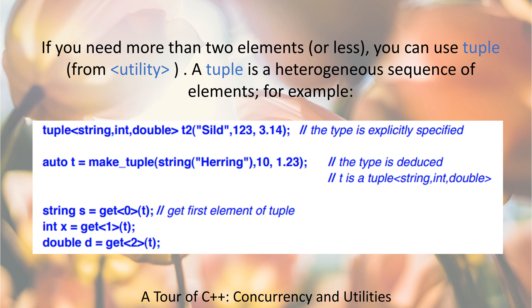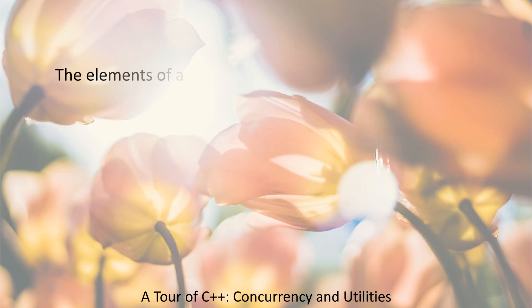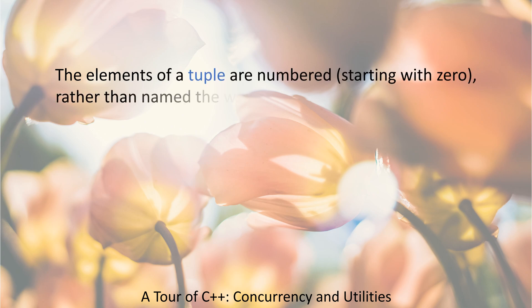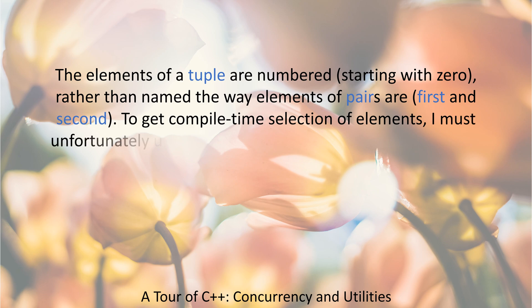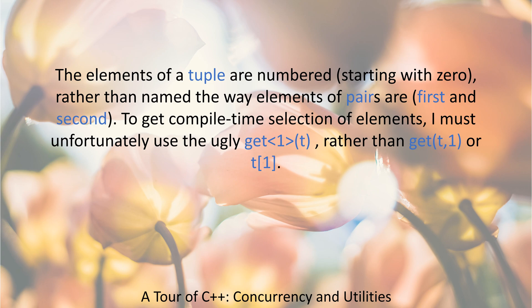string s = get<0>(t);  // get first element of tuple
int x = get<1>(t);
double d = get<2>(t);
The elements of a tuple are numbered starting with 0, rather than named the way elements of pairs are (first and second). To get compile-time selection of elements, I must unfortunately use the ugly get<1>(t) syntax, rather than get(t, 1) or t[1].